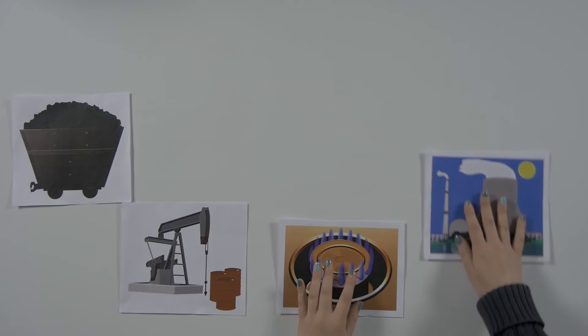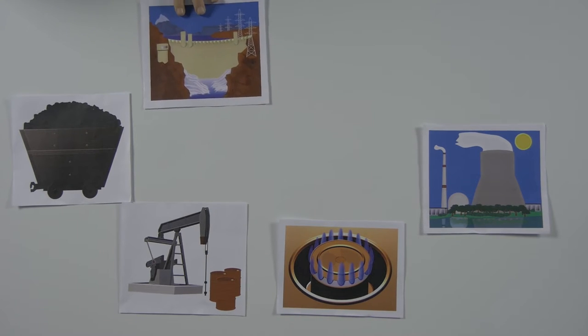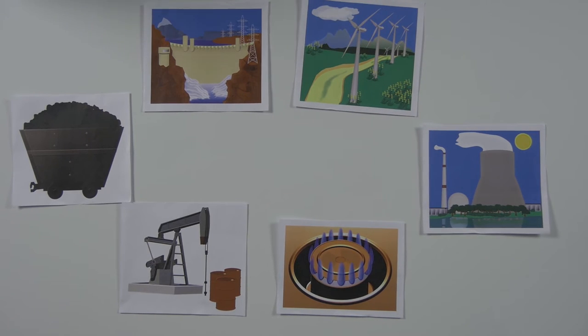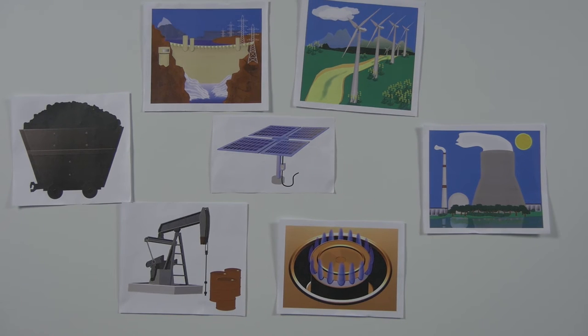There are lots of ways to get energy. There are non-renewable sources such as coal, oil, natural gas, and nuclear energy. There are renewable sources such as hydroelectric power and wind power, but one clean and efficient way to get energy is by using the power of the sun.